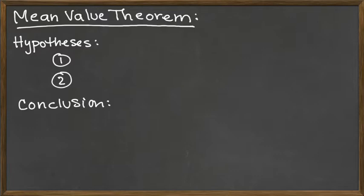And to be able to digest what the mean value theorem is saying, I prefer to think about it as: what are the hypotheses, and then what conclusion do we get out of those hypotheses?